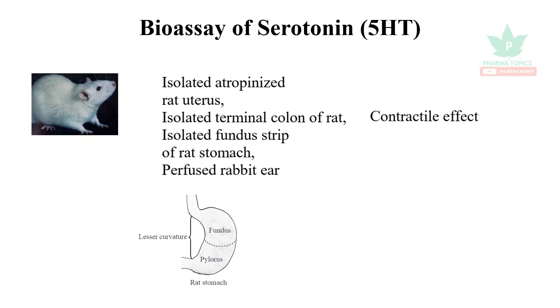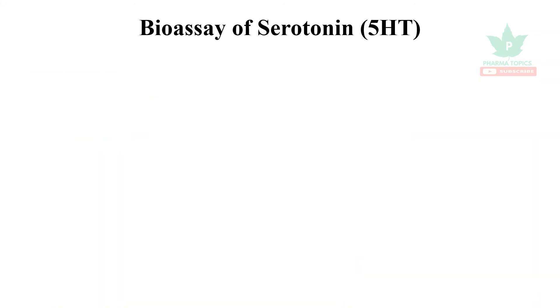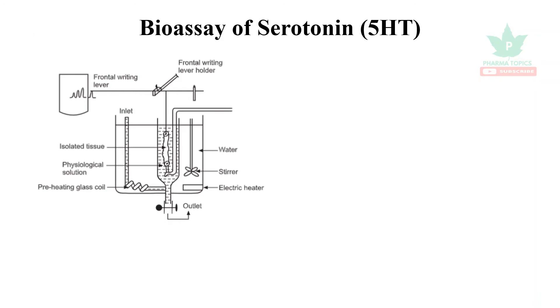The stomach contains two portions: the upper portion is called the fundus and the lower portion is called the pylorus. The tissue from the fundus portion is isolated and that is called rat fundus strips, which are used for the bioassay of serotonin.